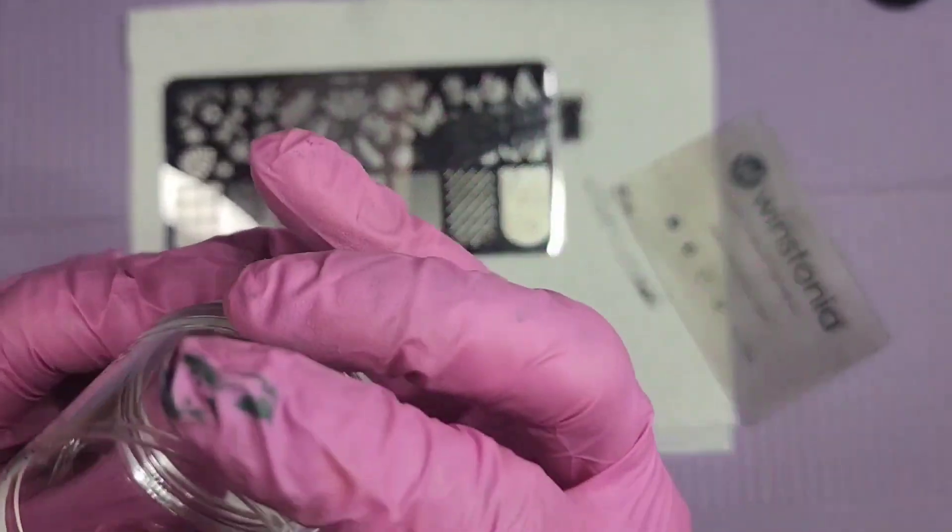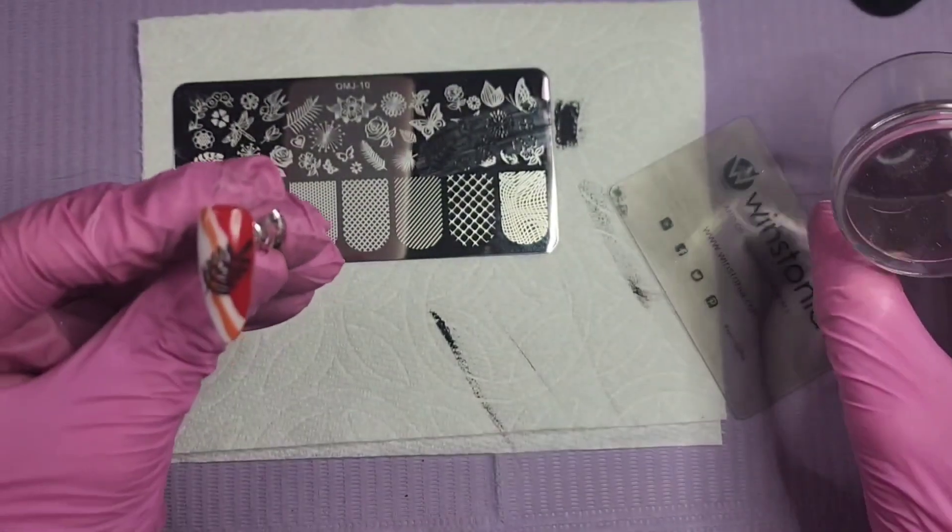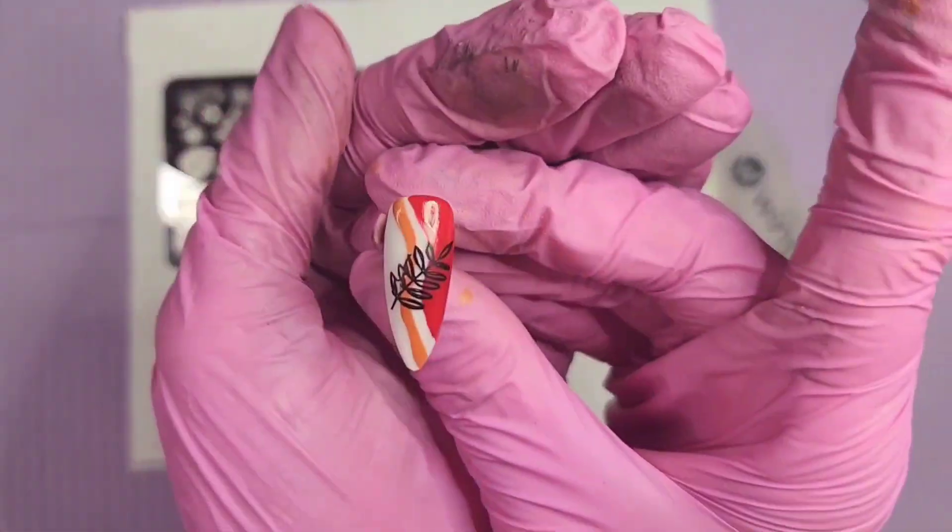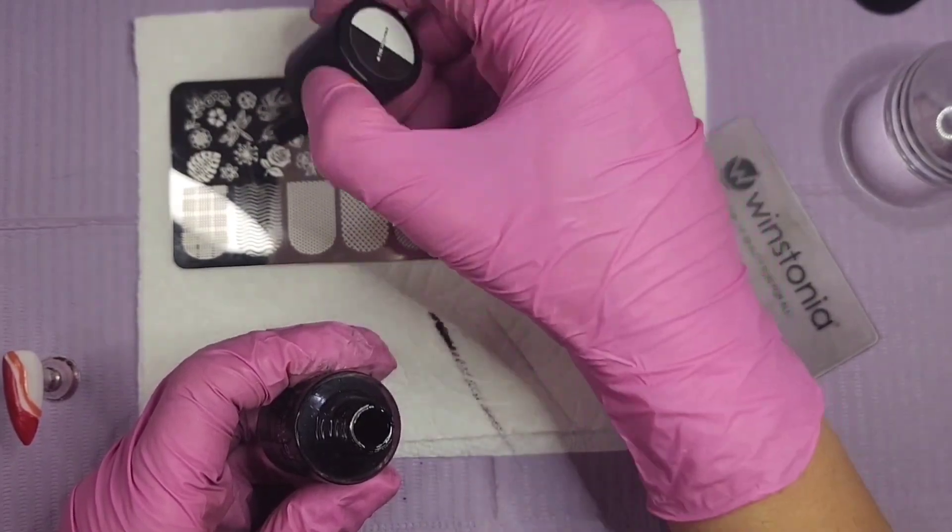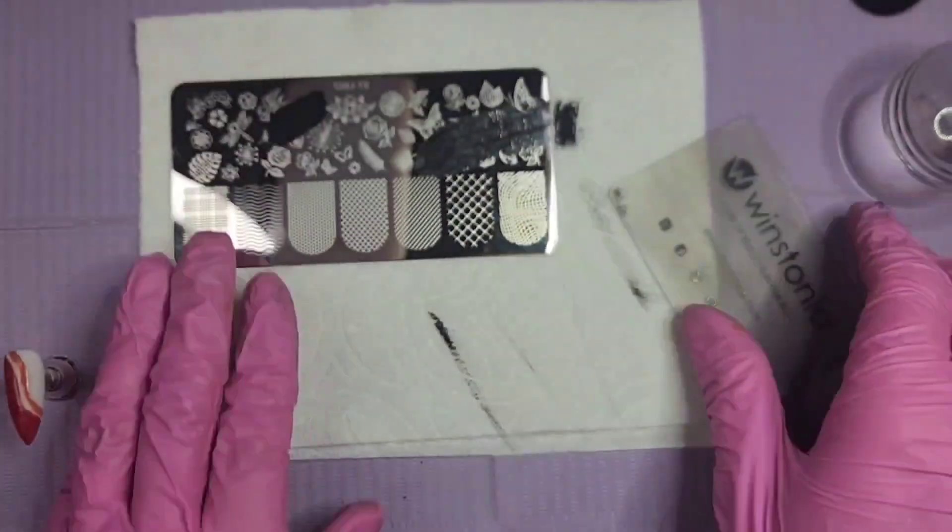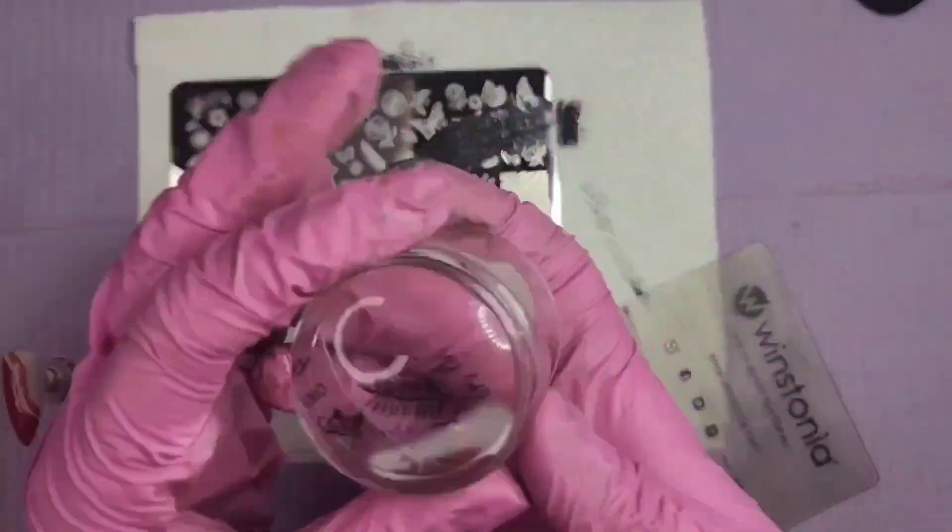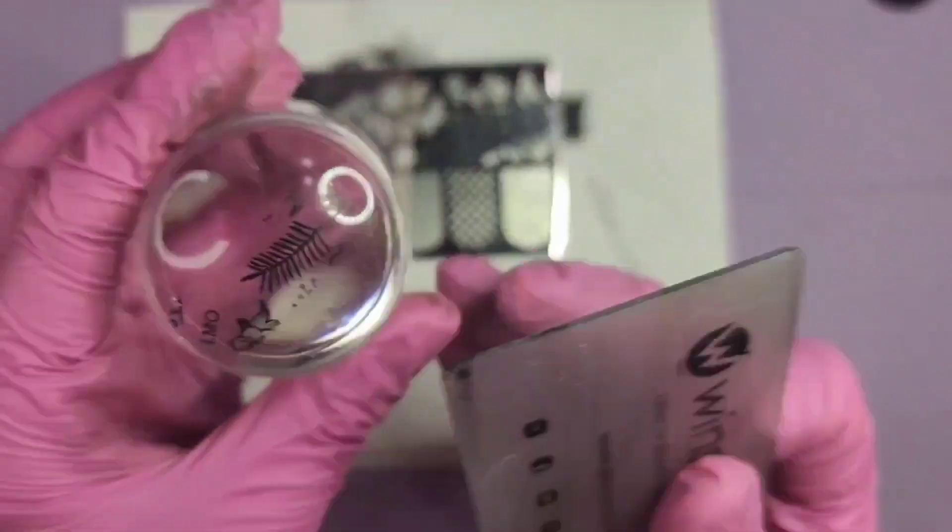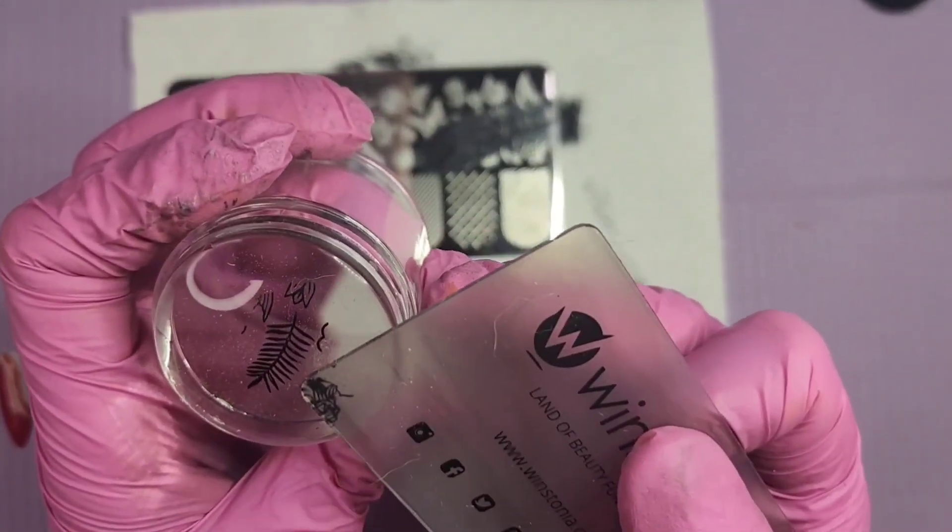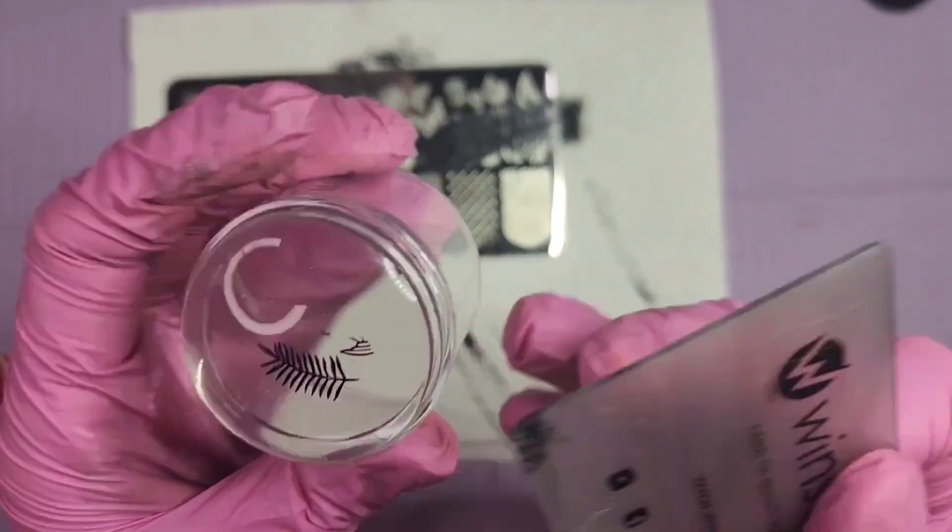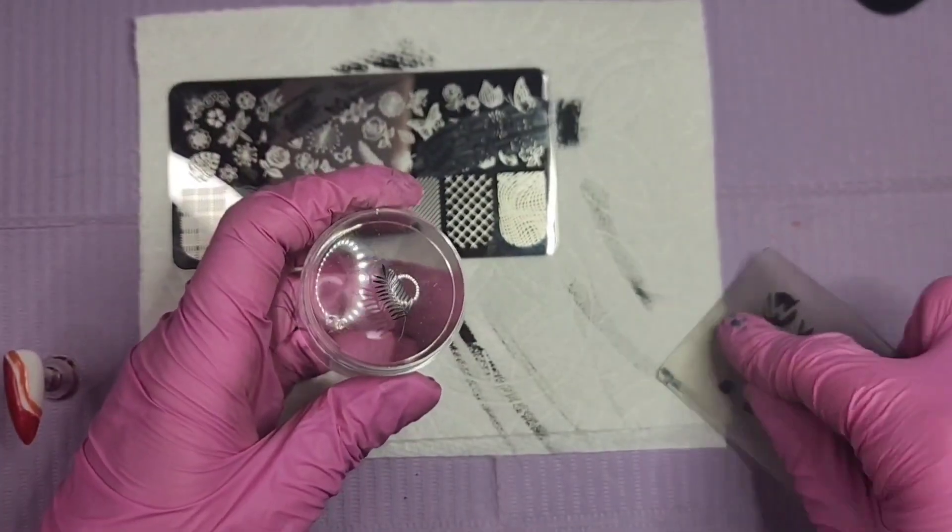You can see I just kind of place it where I want and boom. A little piece of it did stay on the stamper, but I was able to kind of line it up where it was supposed to go. You really can't even tell in the pictures that it did that. I also had a little mishap with this one where you'll see in a second. They're just leaves, but they're pretty leaves. I don't know what to say, they're just pretty.